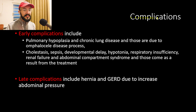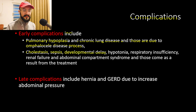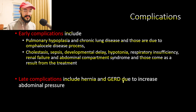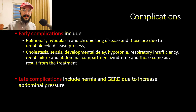Early complications of omphalocele include pulmonary hypoplasia and chronic lung disease from the disease process itself, as well as cholestasis, sepsis, developmental delay, hypotonia, respiratory insufficiency, renal failure, and abdominal compartment syndrome as a result of treatment. Late complications include hernia and gastroesophageal reflux disease due to increased abdominal pressure. This concludes the video on omphalocele, part of the Pediatric Surgery Master Class.